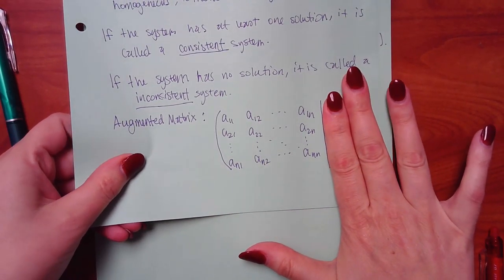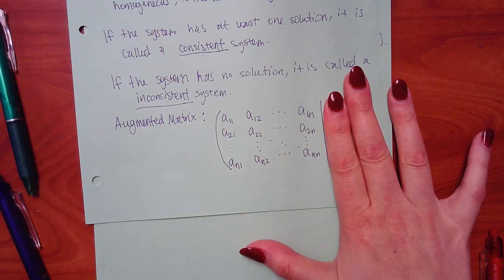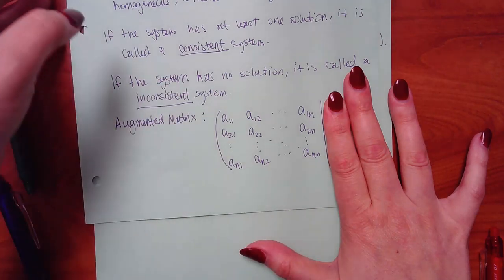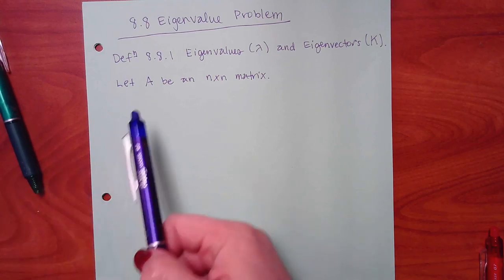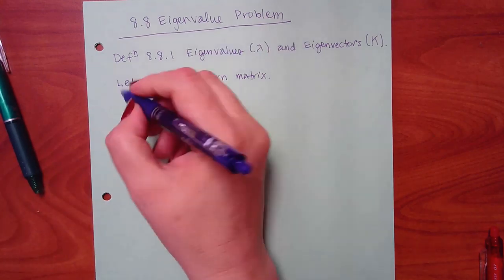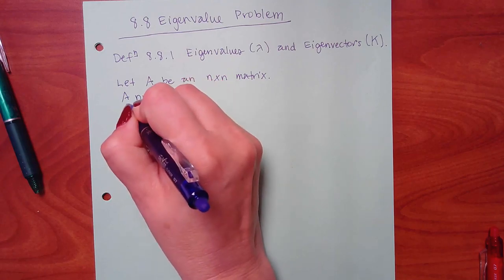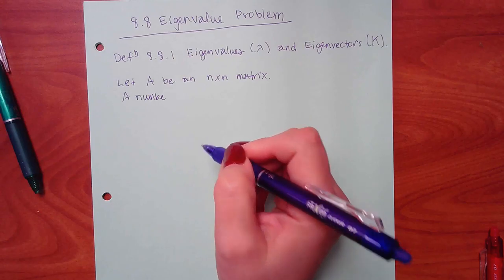So we're going to have a matrix. It says: let A be an N by N matrix. Remember in the augmented matrix, if I were to just look at this side, there are N rows and N columns. When they say let A be an N by N matrix, what they're referring to is your augmented matrix — you just don't know it yet.